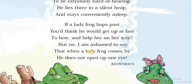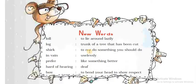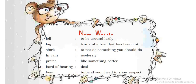I hope all of you have understood this poem. Now let's see the new words. 'Loll' means to lie around lazily. 'Log' means the trunk of a tree that has been cut. 'Shirk' means to not do something you should do. 'In vain' means uselessly. 'Prefer' means to like something better. 'Hard of hearing' means deaf, or not able to listen. 'Bow' means to bend your head to show respect to someone.